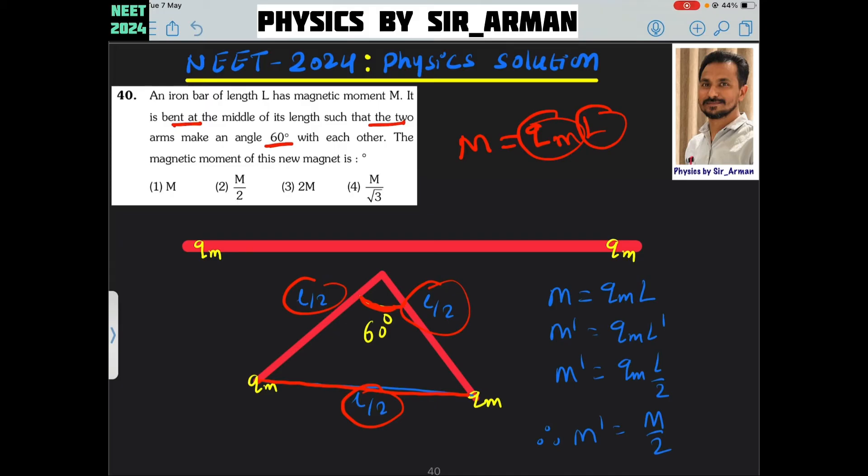The third will be equal. So, now we have our two poles which are separated by distance L by 2.